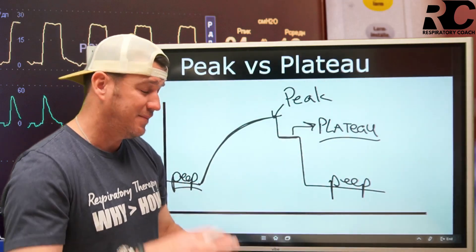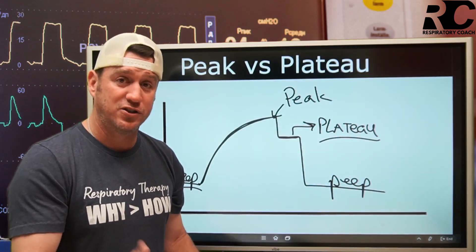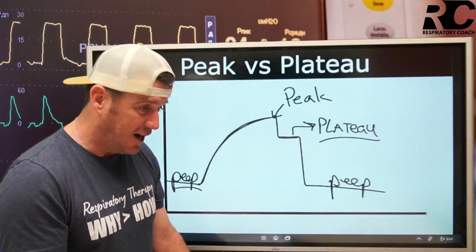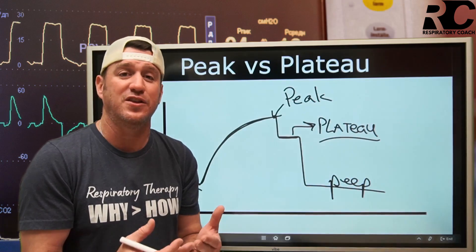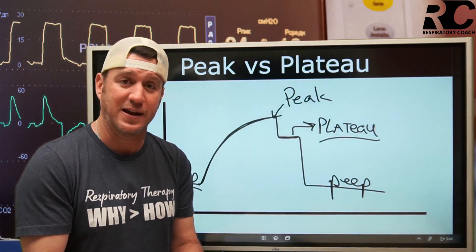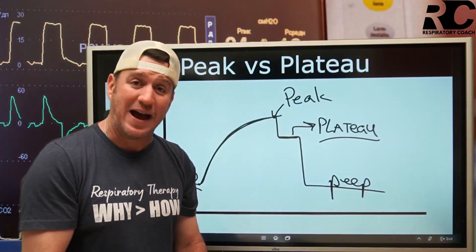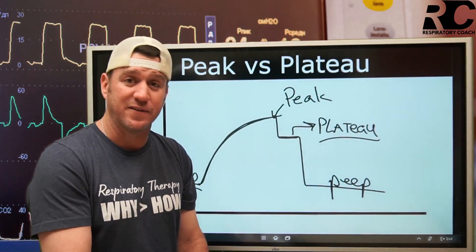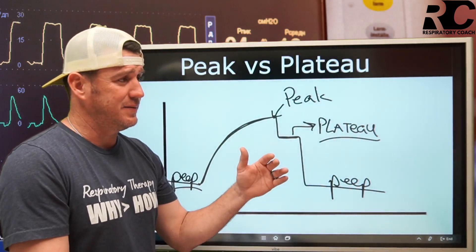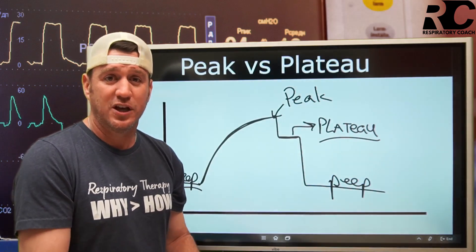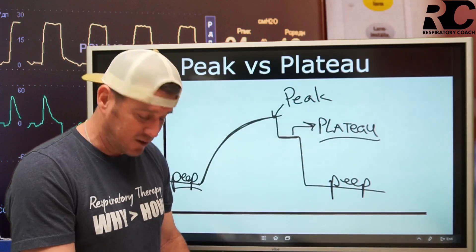Plateau pressure is highly talked about. We know that we use it and focus on it a lot during our lung protective strategies because it is, in some form or fashion, the purest indicator of alveolar compliance — much more valuable than peak inspiratory pressure when we are asking specifically about compliance of the alveolar units. Various data points suggest where these numbers should be kept. ARDSnet says we're targeting to keep our plateau less than 30 centimeters of water pressure.